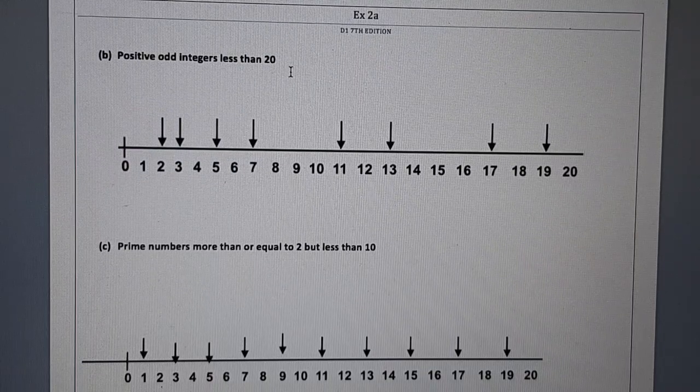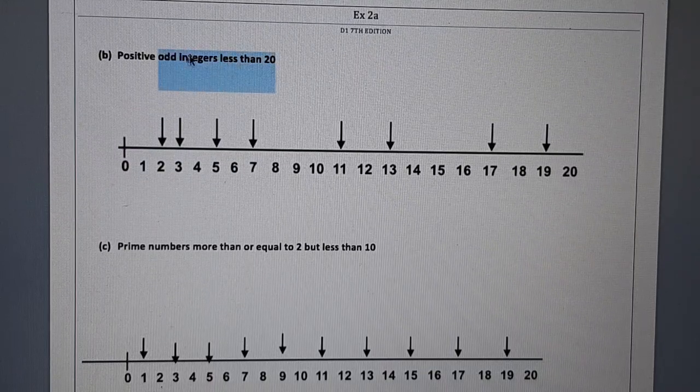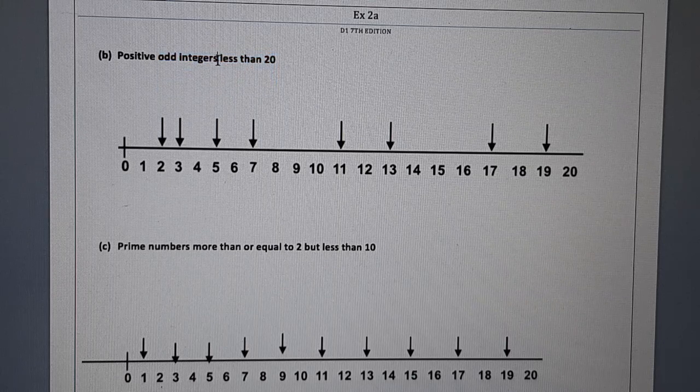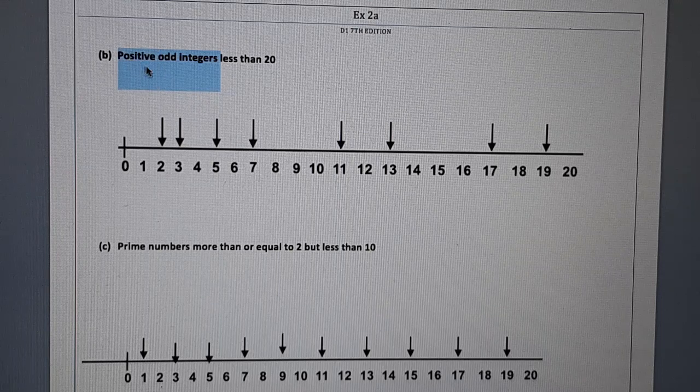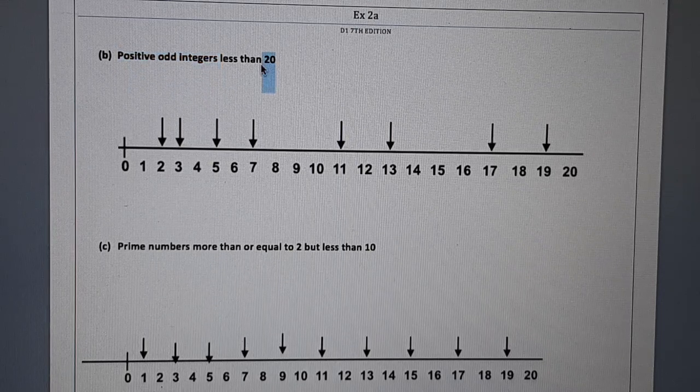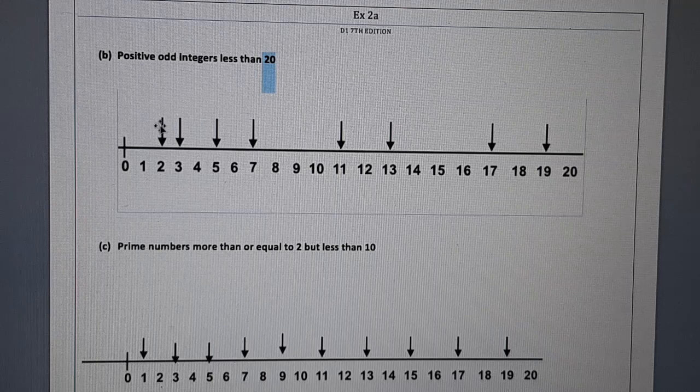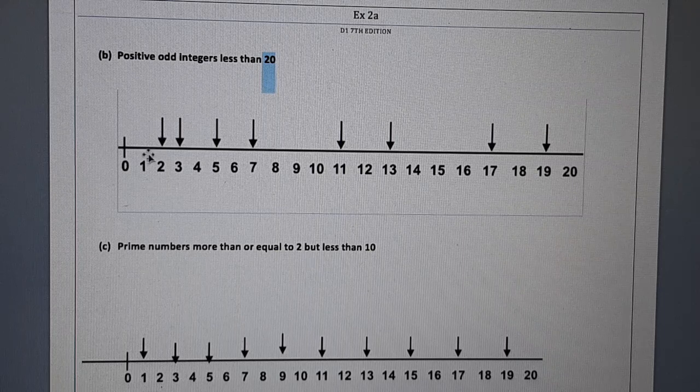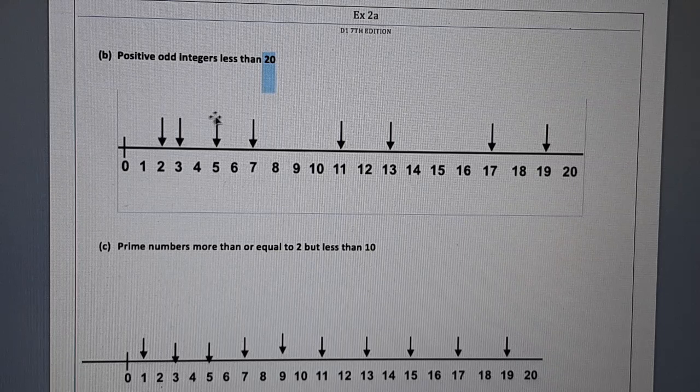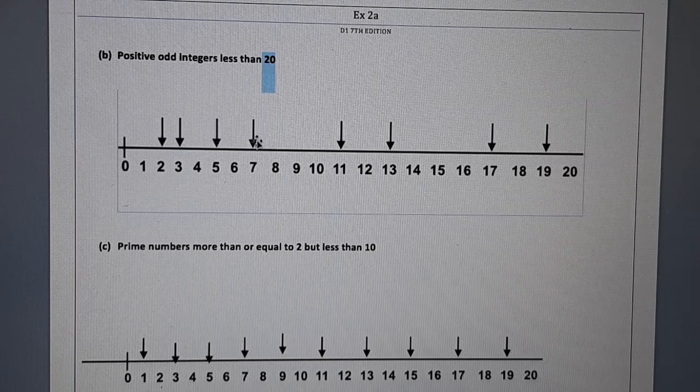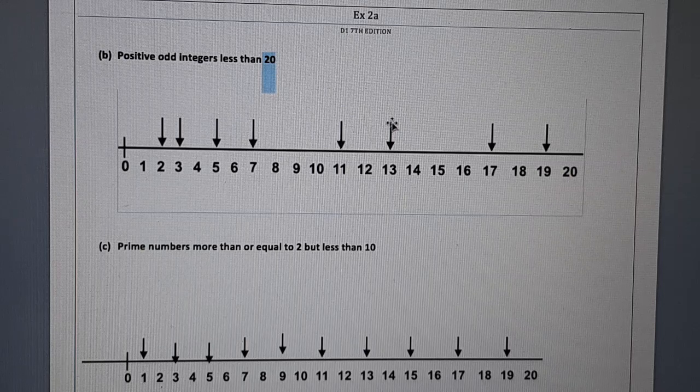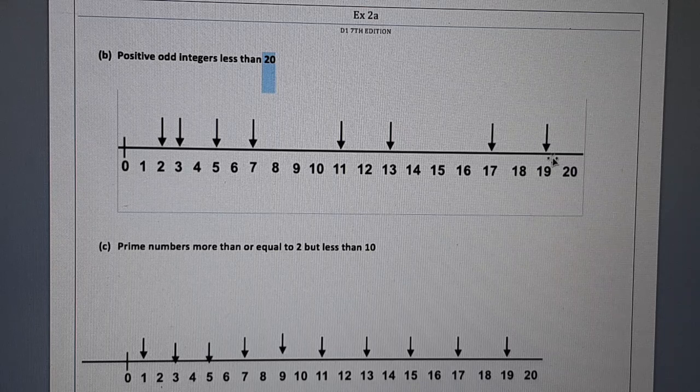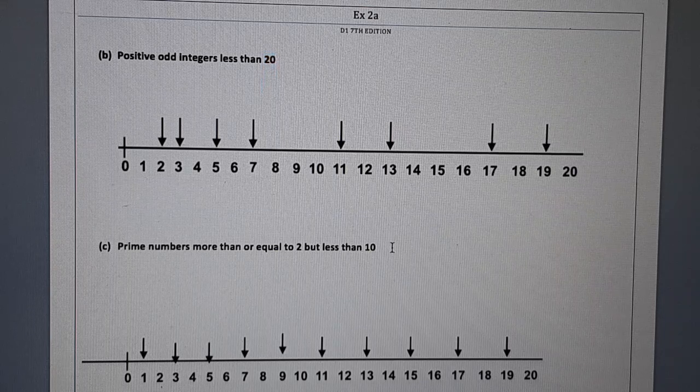In the next question, we have to indicate positive odd integers less than 20. Now the positive odd integers less than 20 are: Now 2 is not included in the odd one, so excuse over here. This will not be part of the answer. 3, then we have got 5, then 7, then 11, then 13, then 17, then 19. This is the solution for this part.